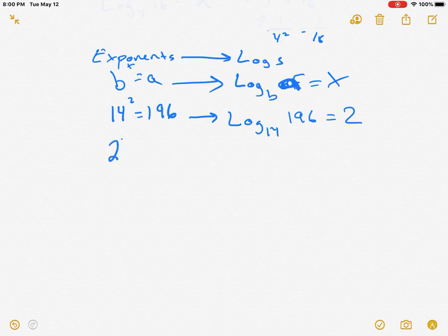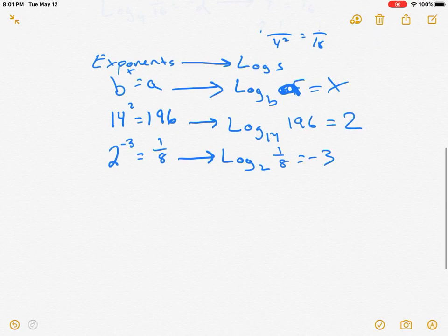Let's look at 2 to the negative third power equals 1 over 8. Right? So, we go ahead. Got our log. That number over 8 equals negative 3. Okay? Nothing too crazy. All right?